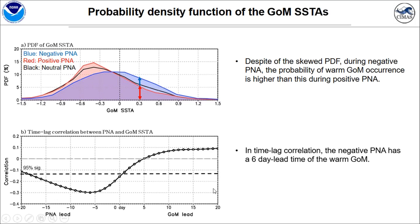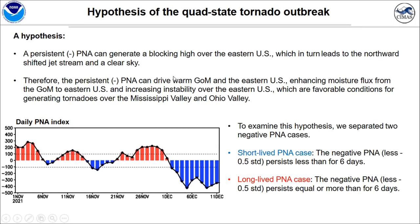This is the time-lag correlation between the PNA and Gulf of Mexico SST anomaly. The negative PNA has a 6-day lead time ahead of warm Gulf of Mexico SST. This result suggests that the negative PNA can increase Gulf of Mexico SST through atmospheric circulation changes. And there is a 6-day time lag to this link.